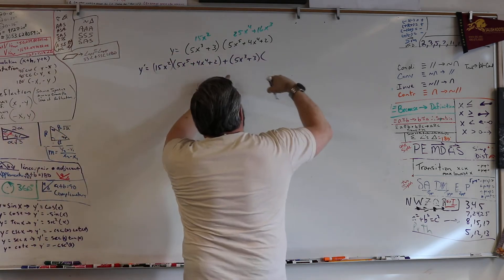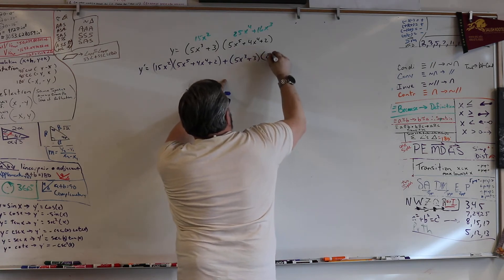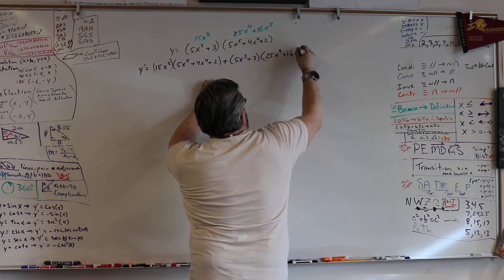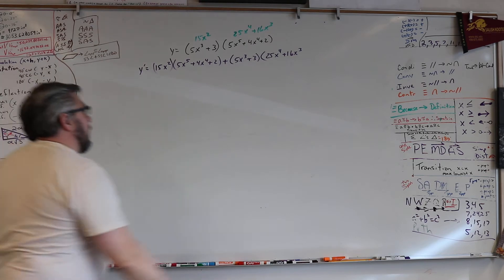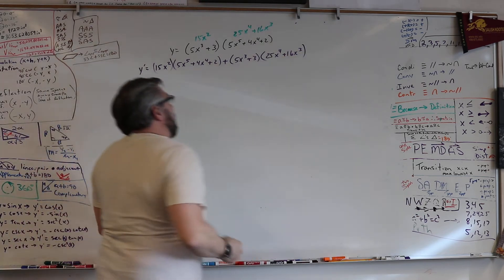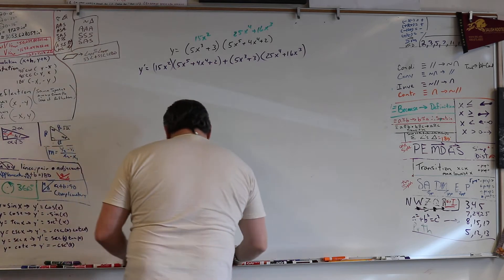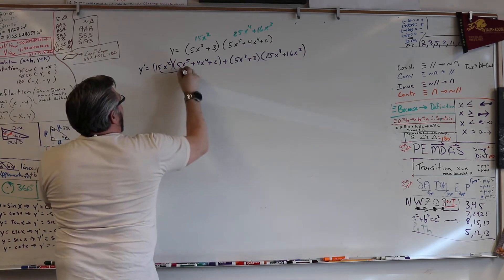Which would be? Keep going. You guys are doing great. 25x plus 16x to the third, right? Yes. Okay. Okay. So now we got clam shells going on. This one's a half clam. Right? Boom. Boom.